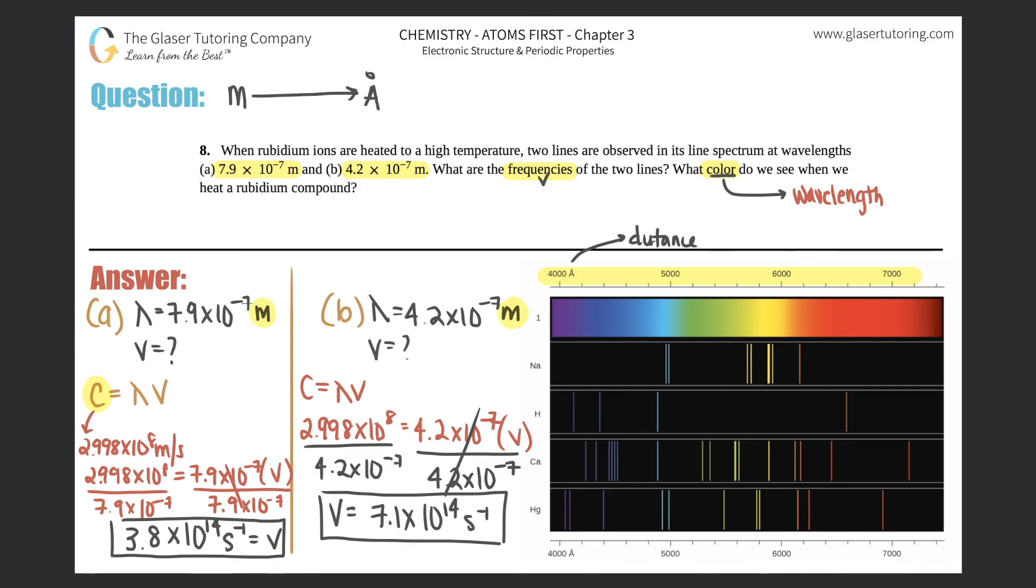To go from meters to angstroms, all you do is multiply by 10^10. If you want to go backwards—if you have angstroms and want to go to meters—you would divide by 10^10. So all I have to do is take these two wavelengths for a and b and multiply them by 10^10.